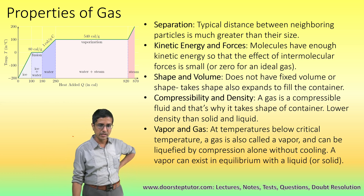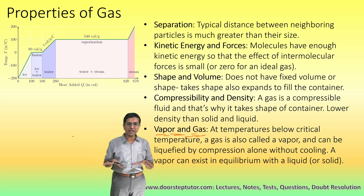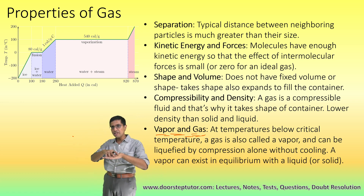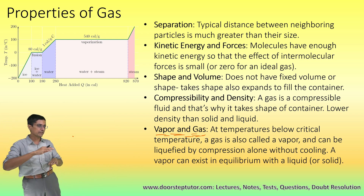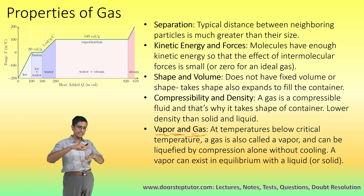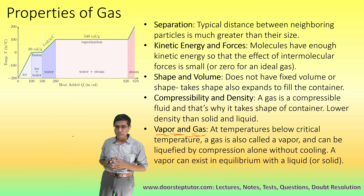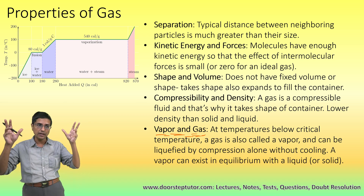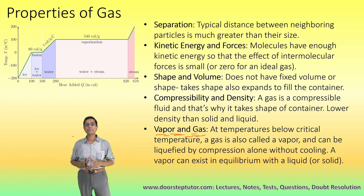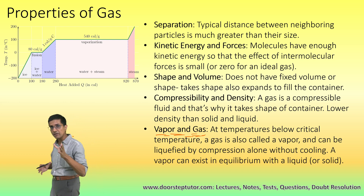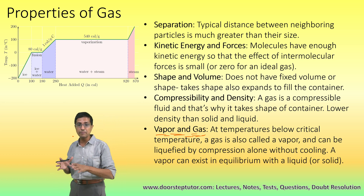There is an important distinction between vapor and gas. A vapor is formed from the liquid and exists together with the liquid. For example, water vapor exists alongside liquid water. Above the critical temperature, if we have water in the gaseous form, we cannot call it water vapor — above the critical temperature, we only have gaseous water. Water vapor can exist only if, at the same temperature, liquid water can also exist.